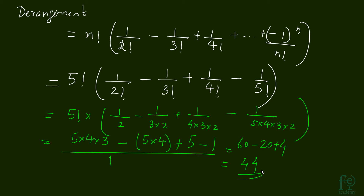This is the formula of derangement. From this formula we found 44 directly, and you can use it for any number — for 10 envelopes, just write 10! × (1/2! − 1/3! + 1/4! − ... − 1/10!). So our probability is 44 divided by 120, which gives us 11 divided by 30. The derangement formula gives the number of ways in which n things can be arranged wrongly in n different places.